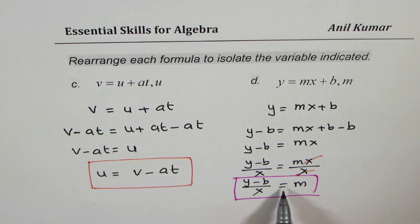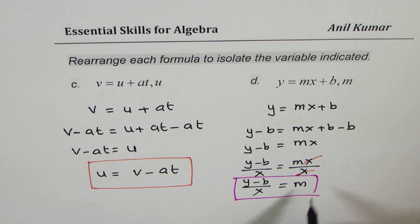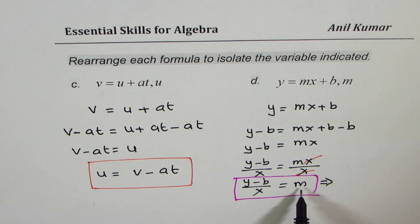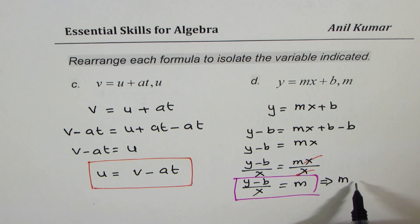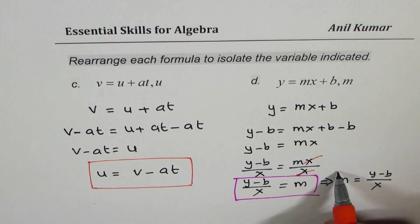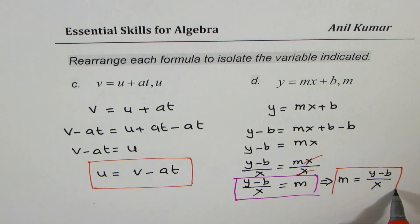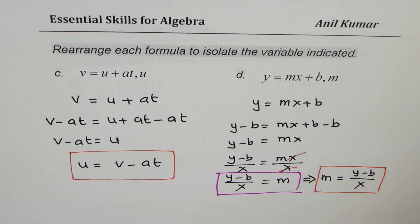In an equation, you can put your variable on the left or right side of the equal sign — it doesn't matter. However, it is standard practice to isolate the variable on the left side by default. So it is preferred to write m = (y − b)/x. In most books, you'll always see that the variable you want to isolate is written on the left side of the equation.